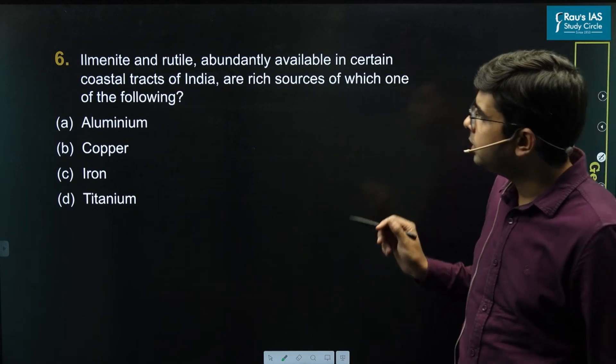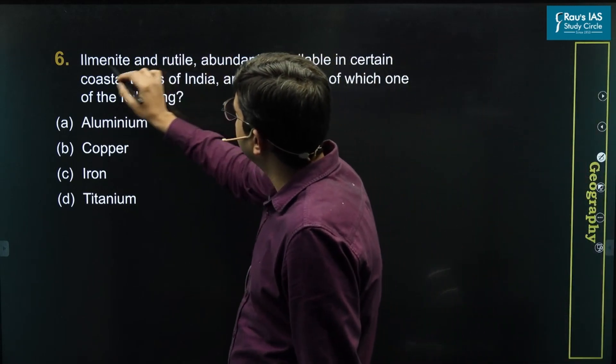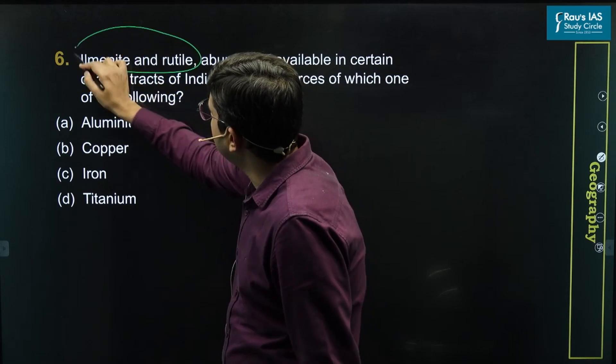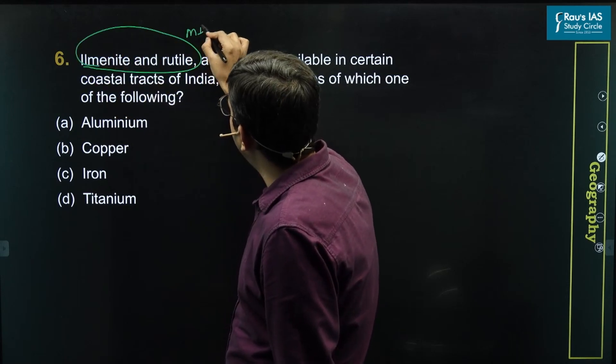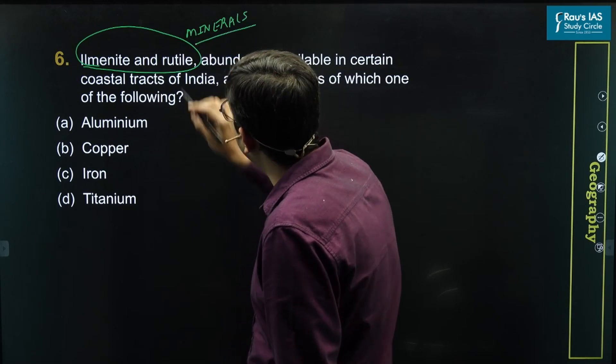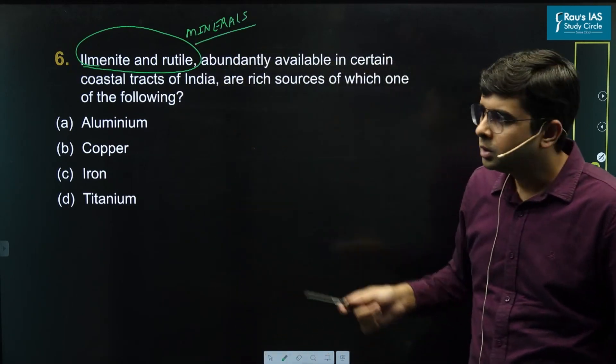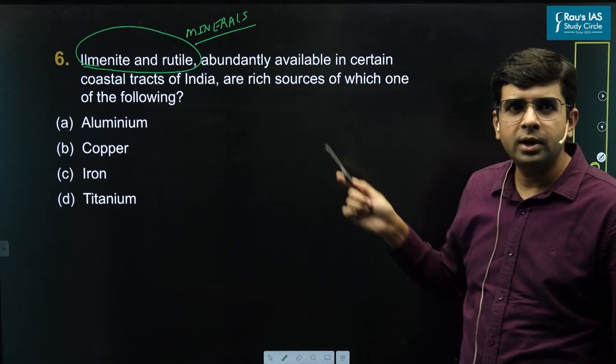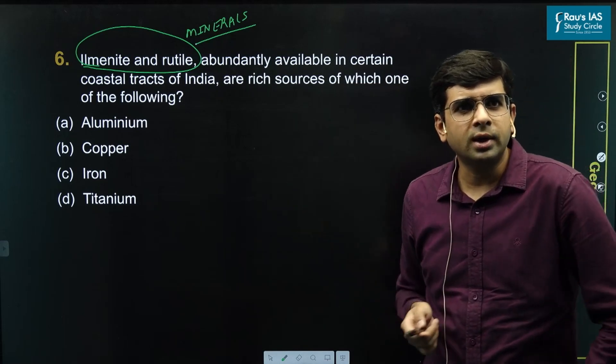This question is focusing upon the mineral situation of India. Ilmenite and rutile are the two ores which are being asked for the minerals which are present in it. Let's read the question: ilmenite and rutile, abundantly available in some coastal tracts of India,